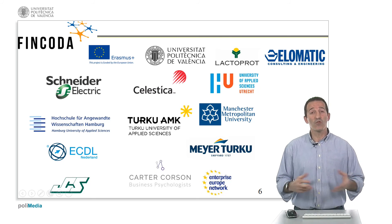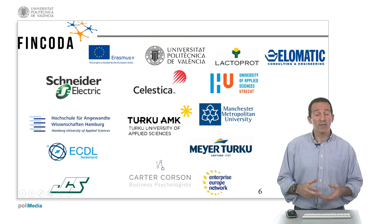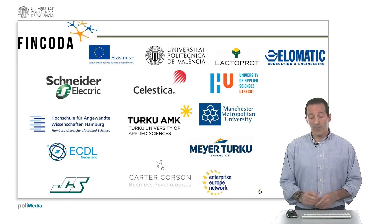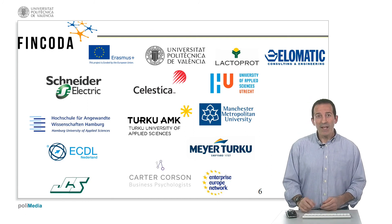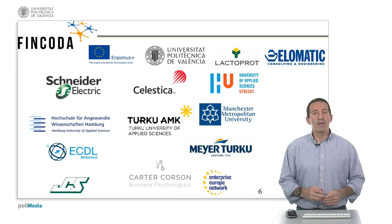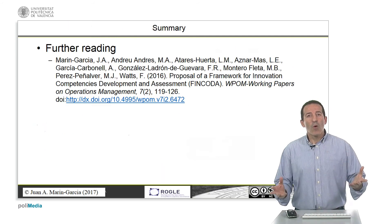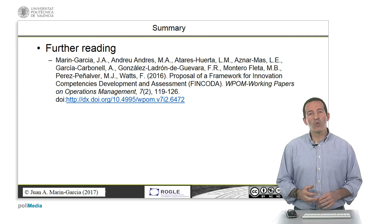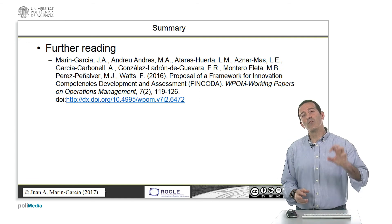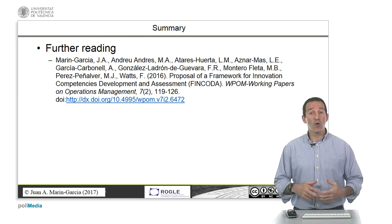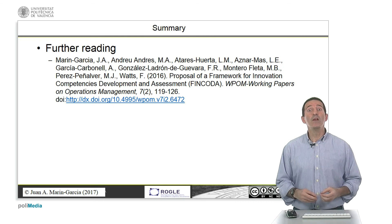To summarize, I've explained the model of innovation that we'll use throughout the course. I've outlined its five components, and I've given you a little bit of background to the FinCoder project. If you're interested in knowing more about the project, you can find further information in the reference shown here.